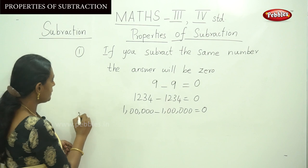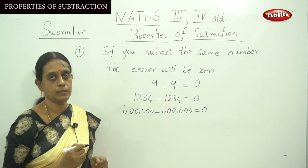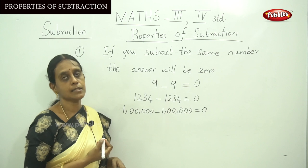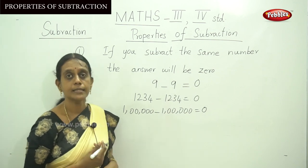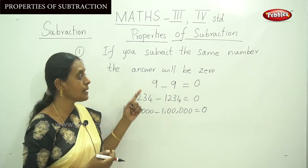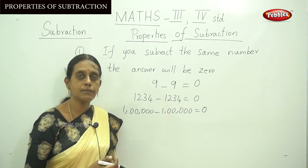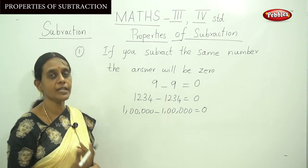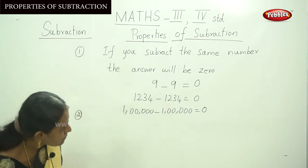The second property: if you subtract the number 1 from any given number, the answer will be the predecessor — the before number. In addition, adding 1 gives the successor; but in subtraction, subtracting 1 gives the predecessor. The answer will be the before number of the given number. This is the second property.